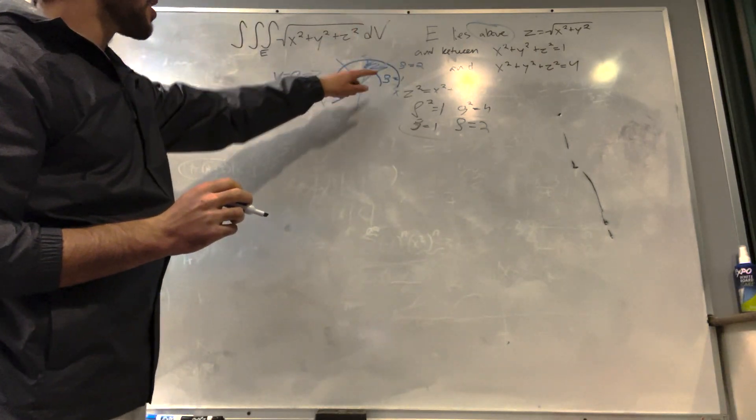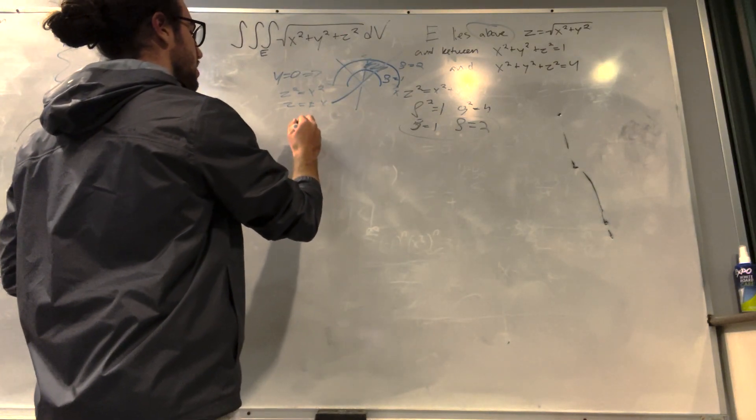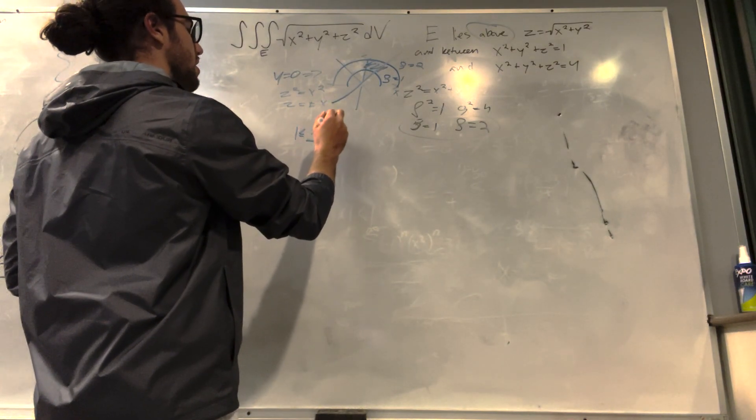So with this line here, let's write this down. So 1 is greater than or equal to rho and equal to 2.